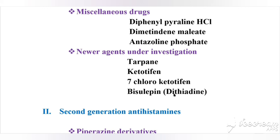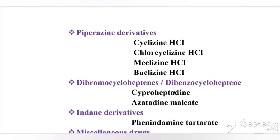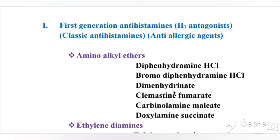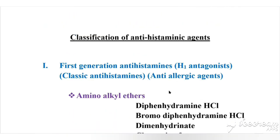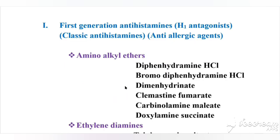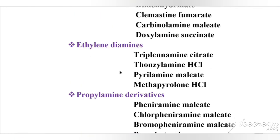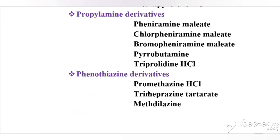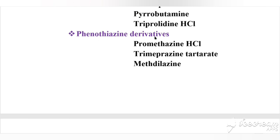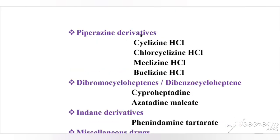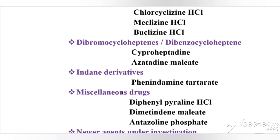Biselpine (trade name Dithiadin) also falls under first-generation antihistamines. To summarize, the term 'antihistamines' refers to first-generation agents, which have nine subtypes: amino alkyl ethers, ethylenediamines, propylamine derivatives, phenothiazine derivatives, piperazine derivatives, dibenzocycloheptenes, indane derivatives, miscellaneous, and newer agents under investigation.